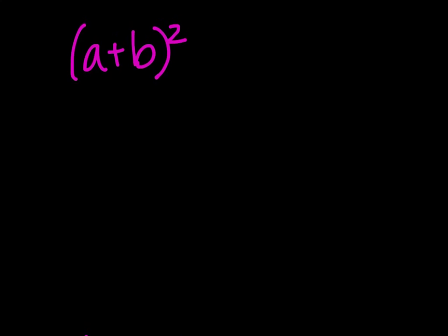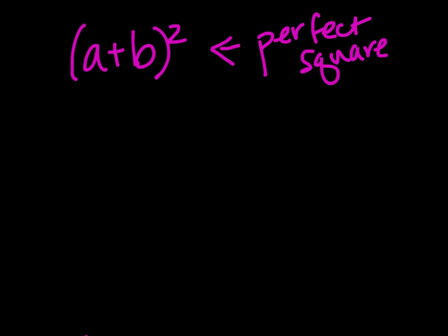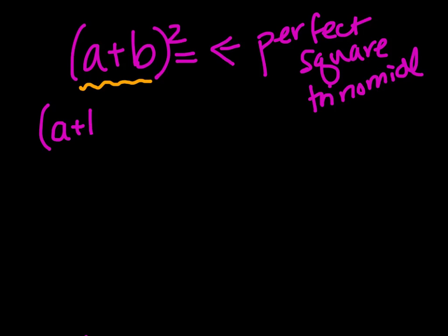Instead, we're going to just go straight into the shortcuts that we can do for perfect squares. We have a plus b and all of that is squared. So this is what's called a perfect square trinomial. When we are squaring something, everything inside of that parentheses gets repeated however many times we have for our exponents.